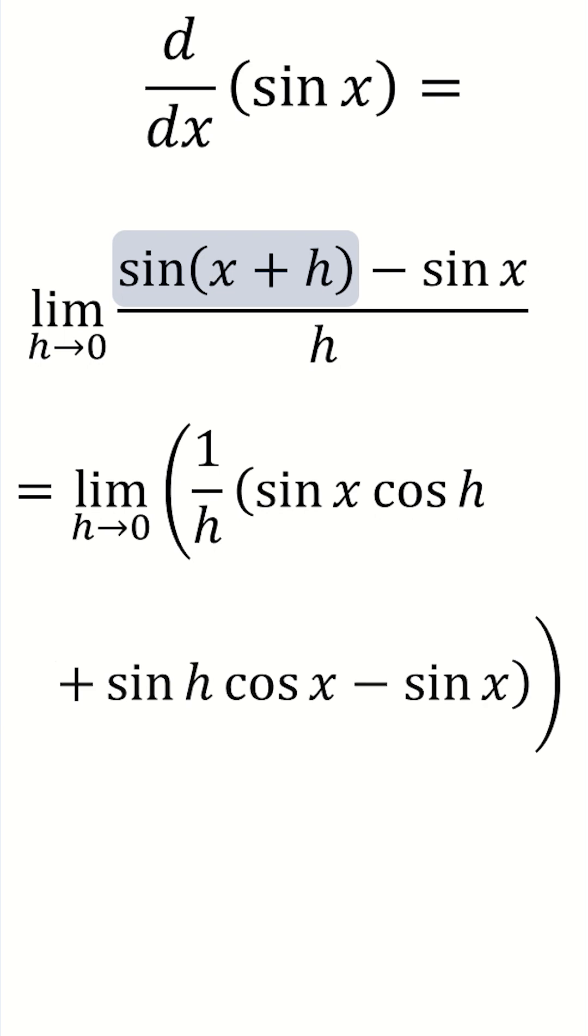cos of h, plus sine of h cos of x, minus the sine of x still, and still all being divided by h, or as I've written here, 1 over h out the front.